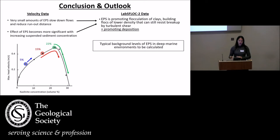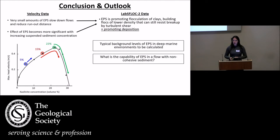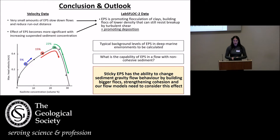In terms of what's next for my research, looking at typical background values of EPS in the deep marine environment is very important — we do have some recently calculated data but I don't fully understand the numbers yet, so that's the next stage. It's also important to look at the capability of EPS with non-cohesive sediment particles such as silt and sand grains: is it still able to bind them together in a flow, and what does that mean for deposit architecture? You might have silt and sand bound together and deposited, so you might not get the same fining-upwards grading. The key takeaway is that EPS is not just along for the ride — it is a driver in sediment gravity flows, able to change flow behaviour by building bigger flocs and strengthening cohesion, and our flow models in sedimentology do need to consider this effect.